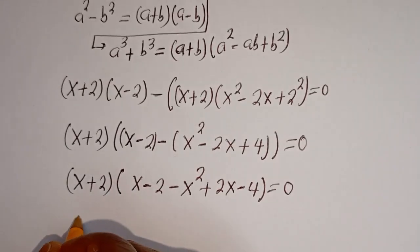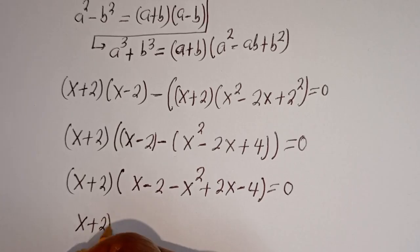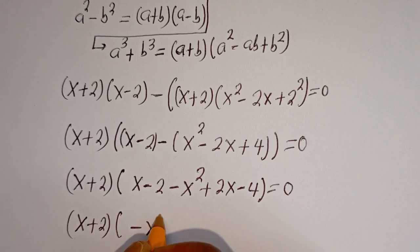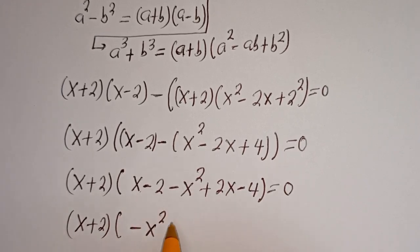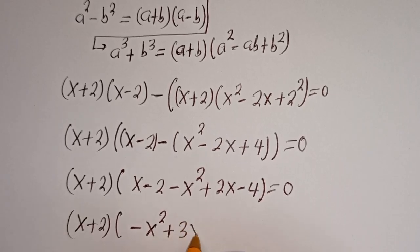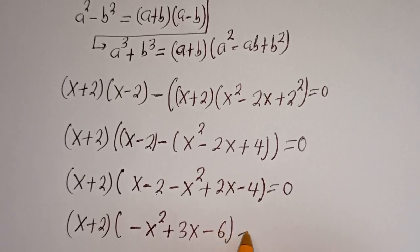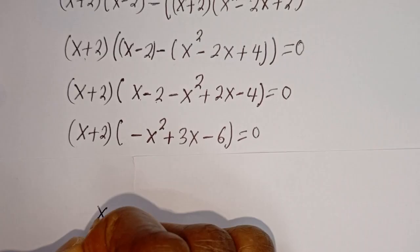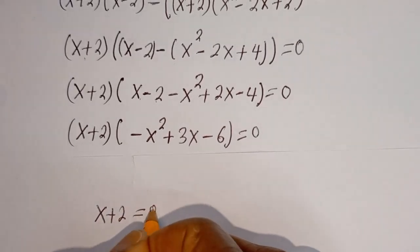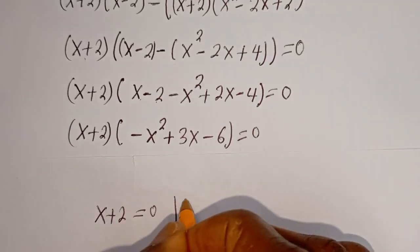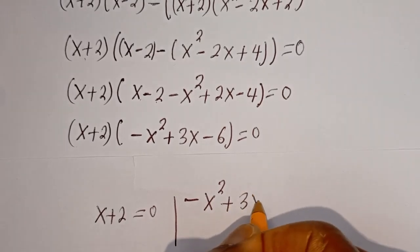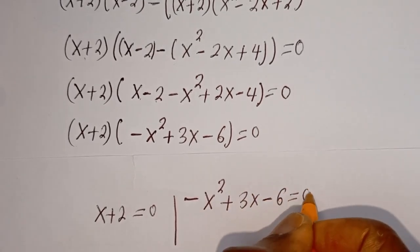Then we have s plus 2 bracket: here is minus s squared, then plus 2s, this is plus 3s minus 2 minus 4, this is minus 6, is equal to 0. There are two cases here. The first case is s plus 2 is equal to 0, and the second case is minus s squared plus 3s minus 6 is equal to 0.